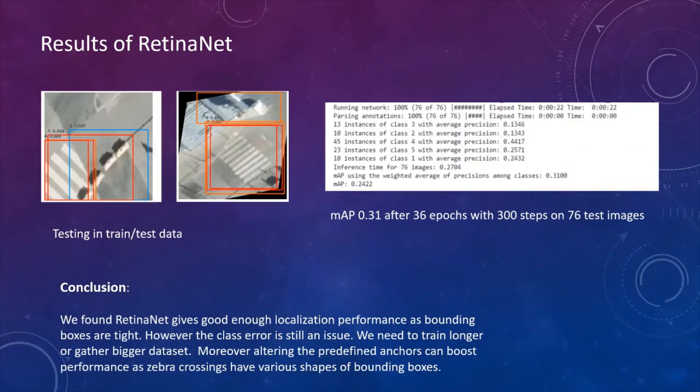The results of RetinaNet were not good. We achieved only after 36 epochs, about 31 in average precision. We found that in general RetinaNet gives good enough localization performance. We can see here that bounding boxes are tight. However, we can see that it has many labels. So the neural network doesn't know for sure what category it is. So our future goal is to train the network longer or to gather bigger dataset. Moreover, we can alter the predefined anchor boxes. Maybe it can boost the performance because the pedestrian crossings actually require different sized anchor boxes.